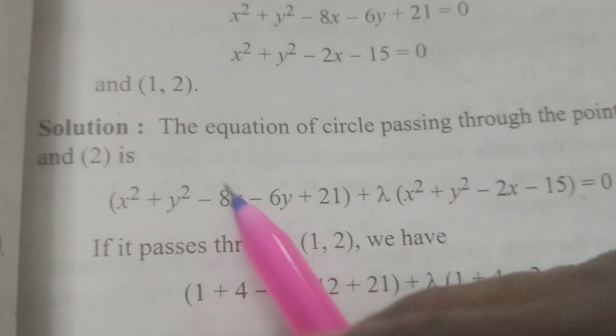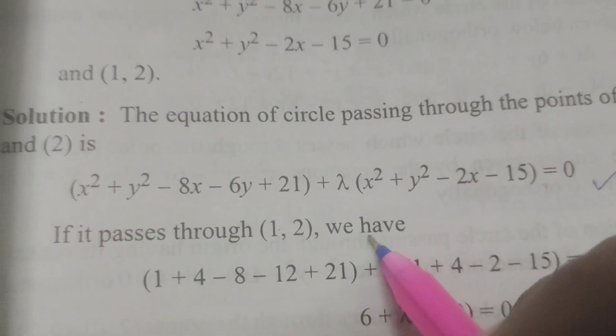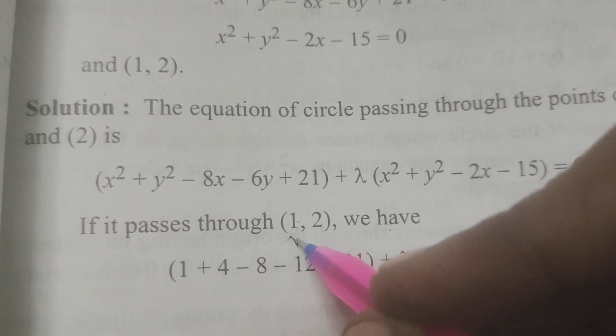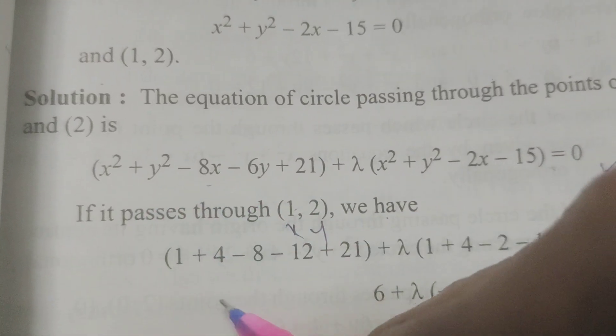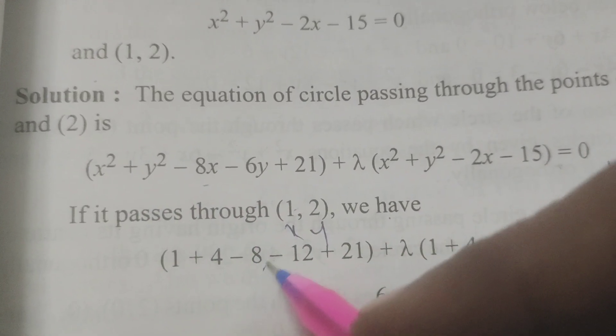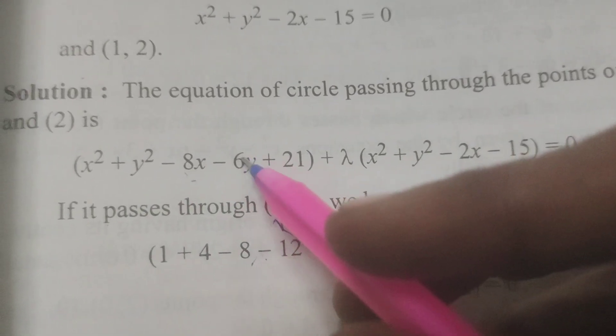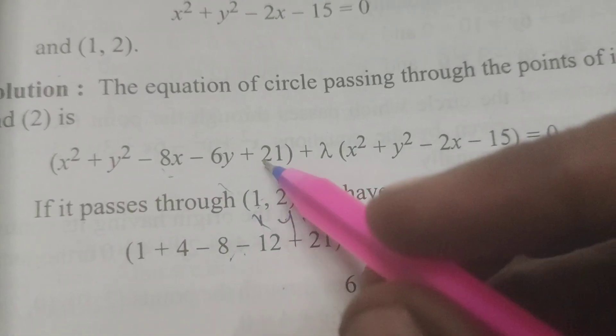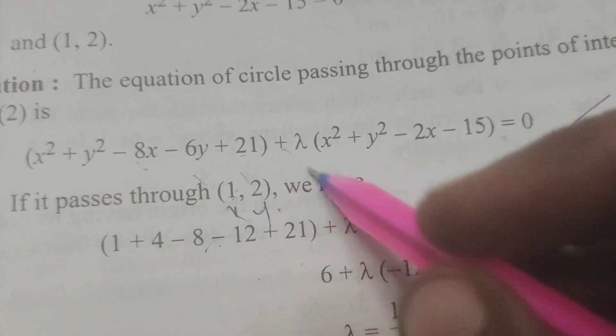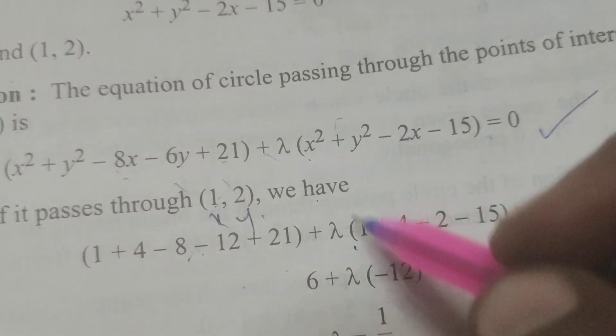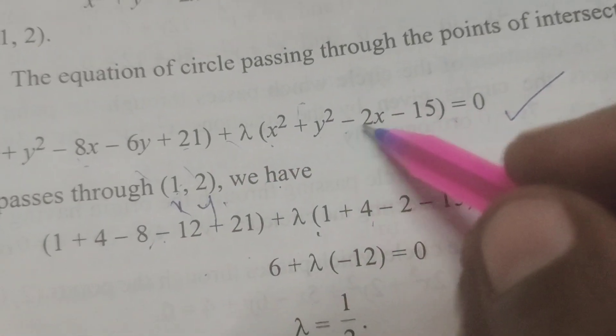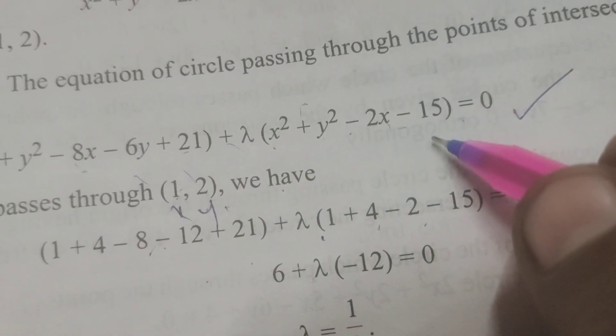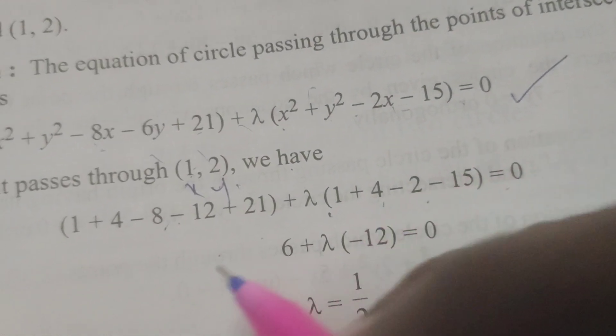If it passes through (1, 2), we substitute x = 1 and y = 2: (1 + 4 - 8 - 12 + 21) + λ(1 + 4 - 2 - 15) = 0. That simplifies to 6 + λ(-12) = 0.